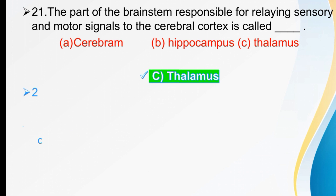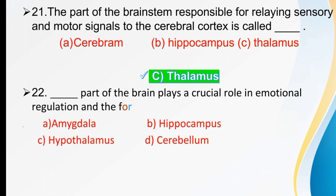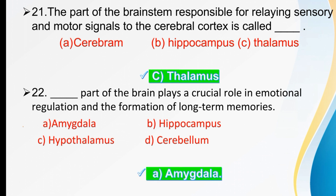Which part of the brain plays a crucial role in emotion and formation of long-term memories? Options are amygdala, hippocampus, hypothalamus, or cerebrum. The right option is amygdala.